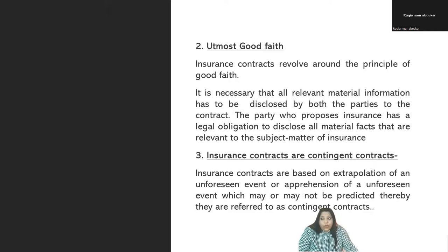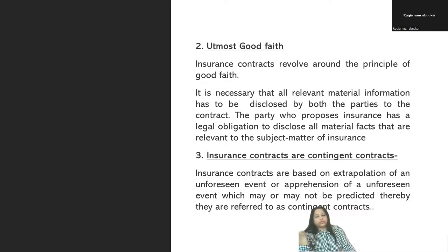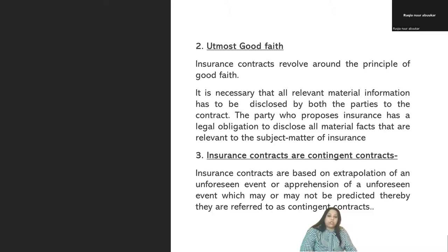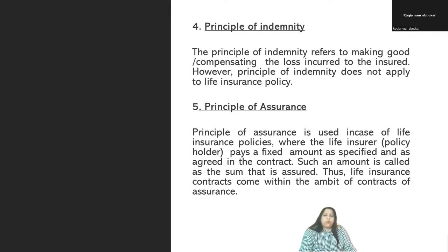For example, contingent contracts: death of a person. Everybody knows it's going to happen; we do not know when. But it's better that somebody is covered by a life insurance policy so that in case of death, the amount is dispersed to the beneficiary. So contingent contracts — insurance contracts are contingent contracts, and the amount will be dispersed on the happening of a particular event which is unforeseen, uncertain — we don't know when or what would happen.